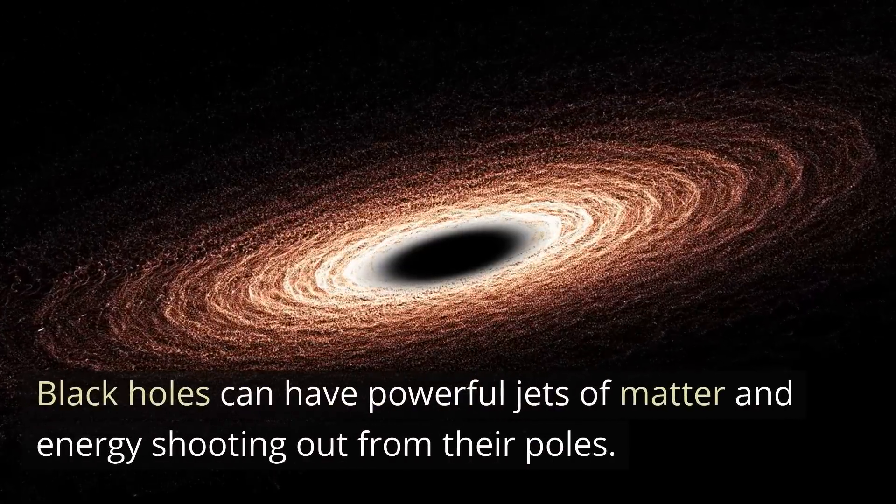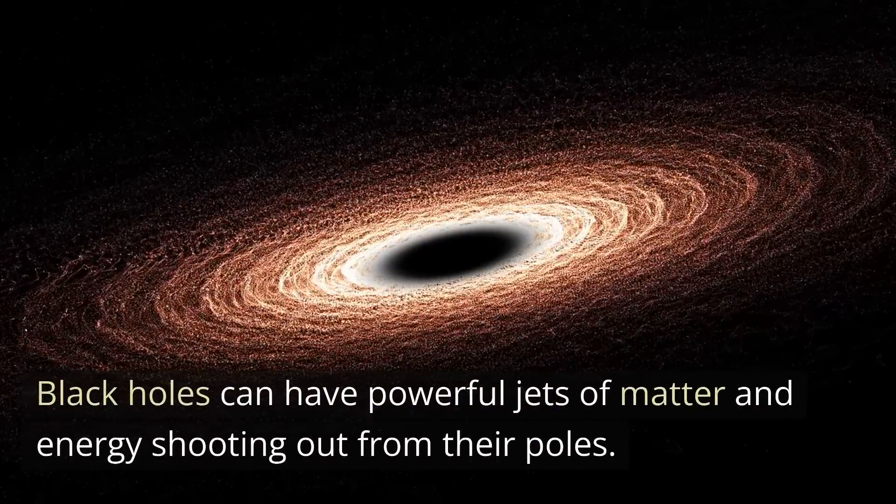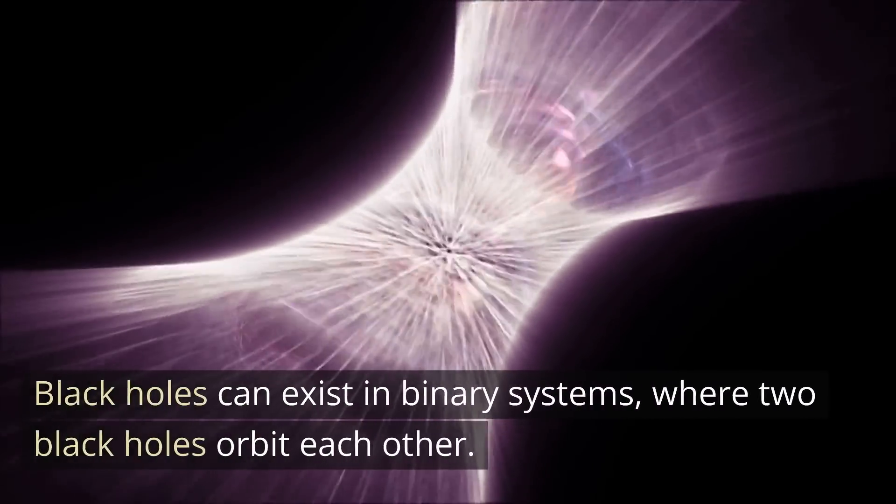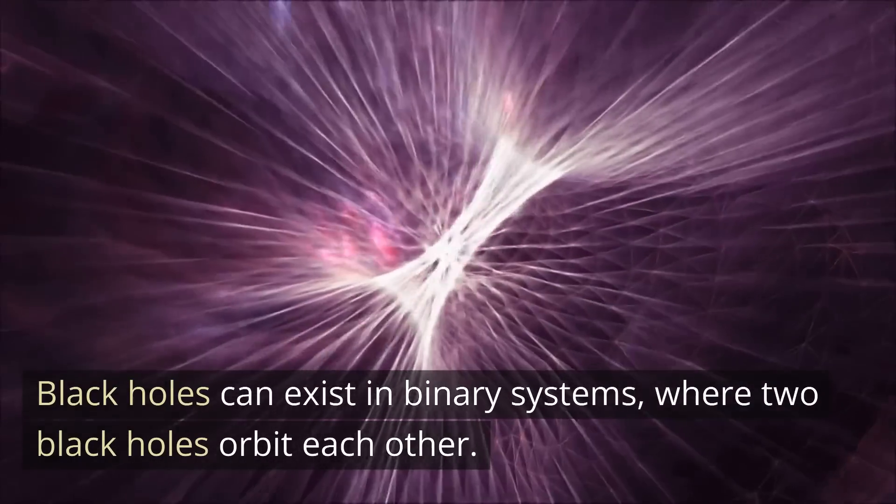Black holes can have powerful jets of matter and energy shooting out from their poles. Black holes can exist in binary systems, where two black holes orbit each other.